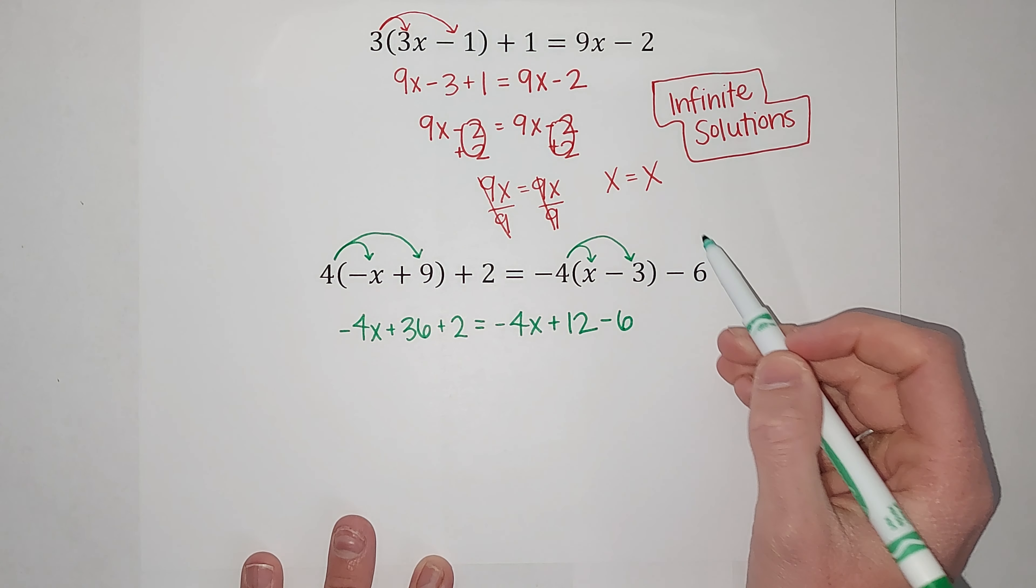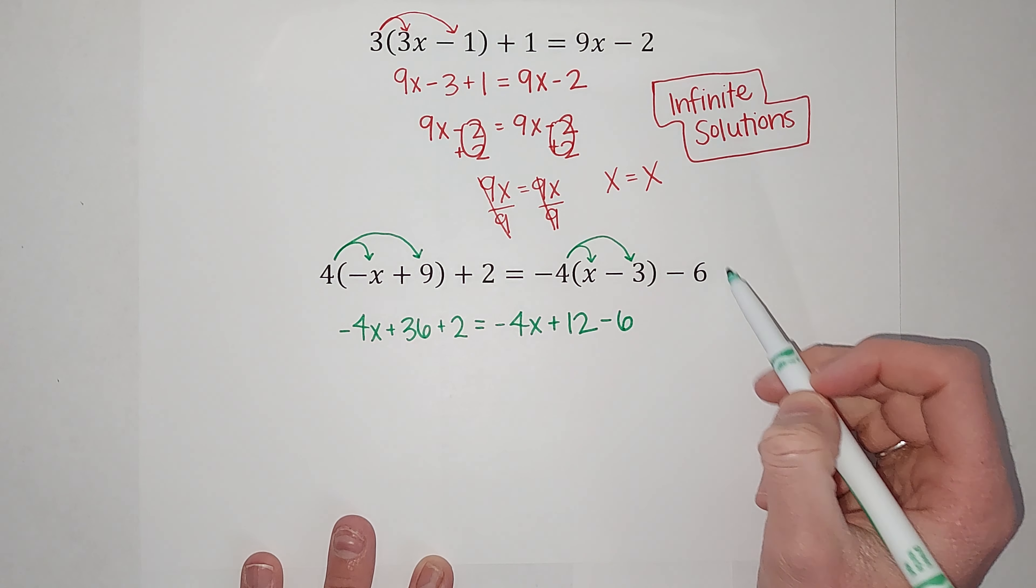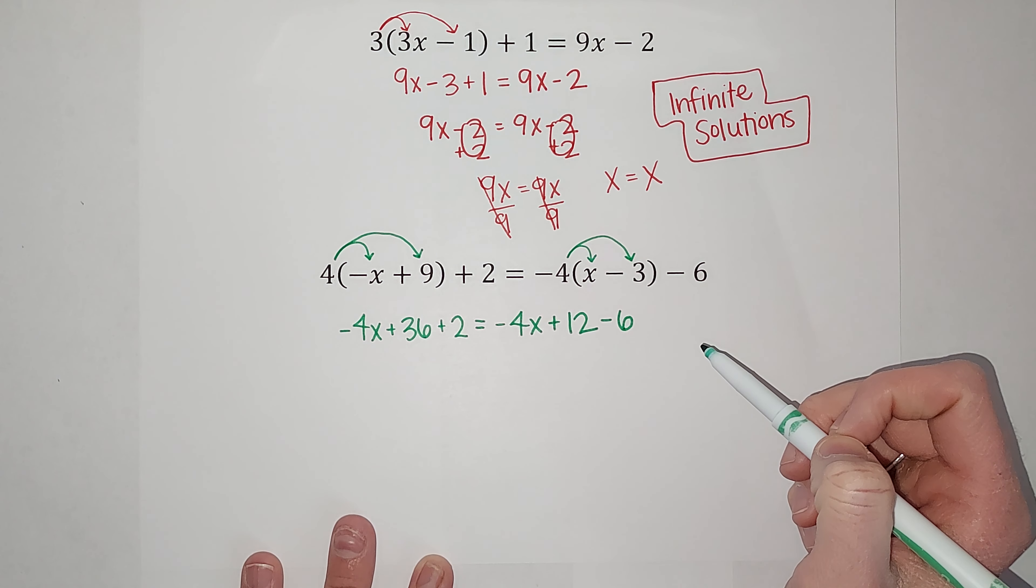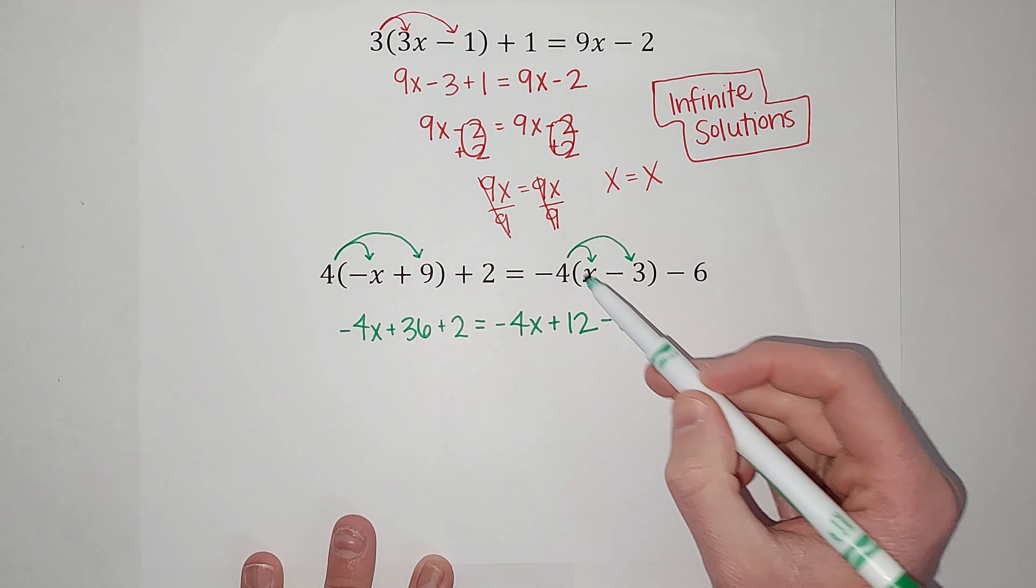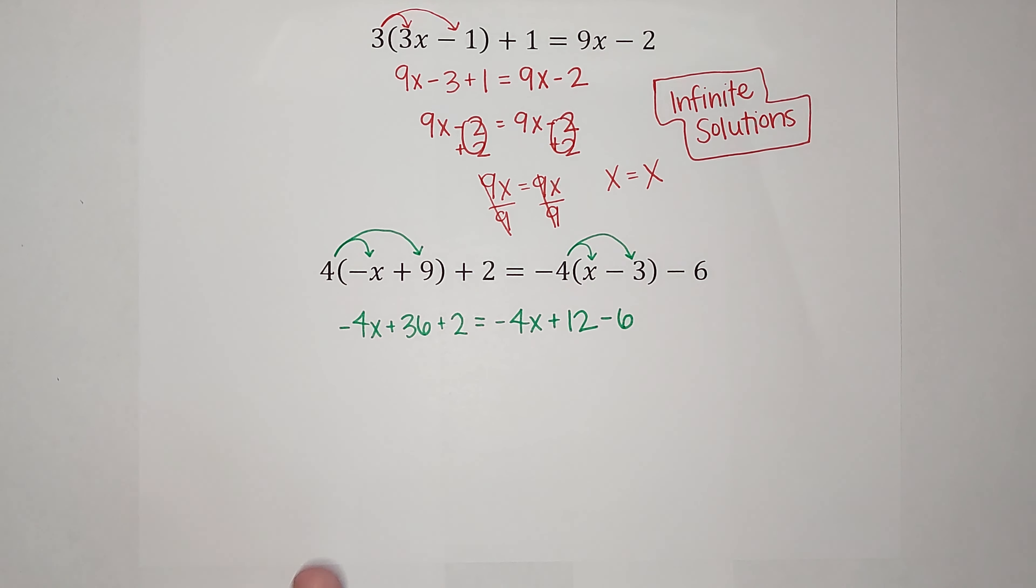And then I still have that minus 6 on the back. Now, if you're like, why didn't she distribute the negative 4 to that negative 6? Well, it's because the negative 6 isn't inside the parentheses. So the negative 4 was only being multiplied by the x minus 3.